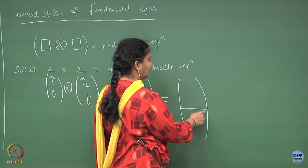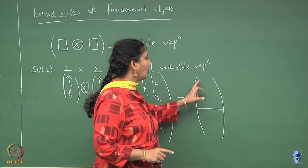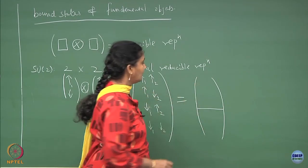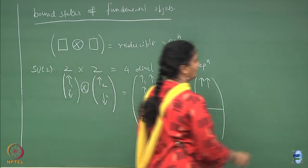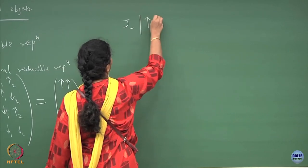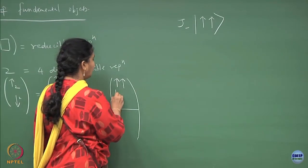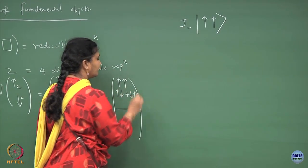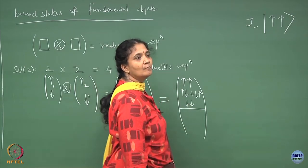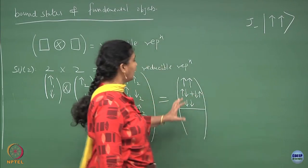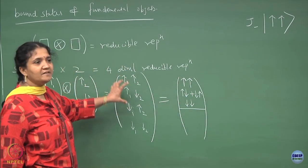The irreducible representations must be such that whatever ladder operators or generators of SU(2) you apply, they should not take you out of the subspace. If you start with the up-up state and do a ladder operation, you get only linear combinations within this subset. That is the meaning of irreducibility — you go from one state to another by the generators of SU(2) within a fixed linear combination subset.